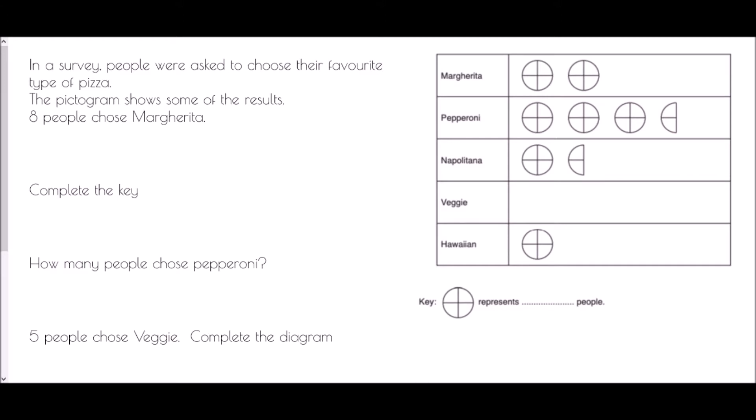And so we are told that eight people chose margarita. Well if we have a look at our diagram, eight people is actually two full pizzas and that is two full pieces cut into four pieces. Well how many pieces is that? Well one, two, three, four, five, six, seven, eight. And so those eight pieces must be the eight people, which means that in our key, which is what we're asked for here, completing the key, that means that each of these individual slices of pizza must be one person. And so every full pizza must be four people.